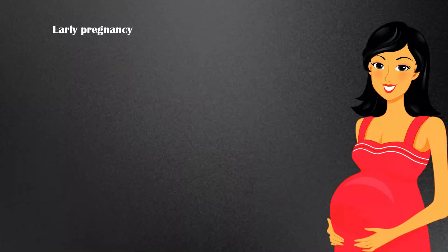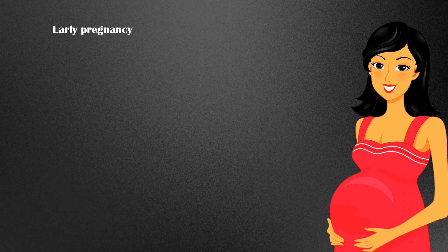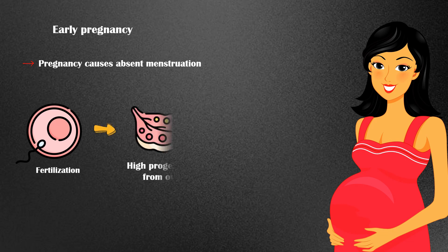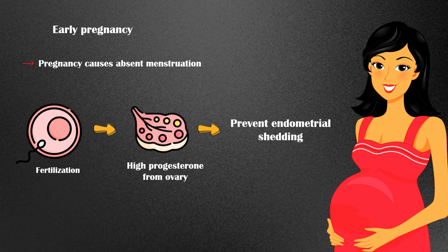Early pregnancy. Pregnancy causes absent menstruation. When the ovum is fertilized with a sperm, a woman's ovaries start to secrete high amounts of progesterone, which prevents the uterine endometrium from shedding, causing absent menstruation.